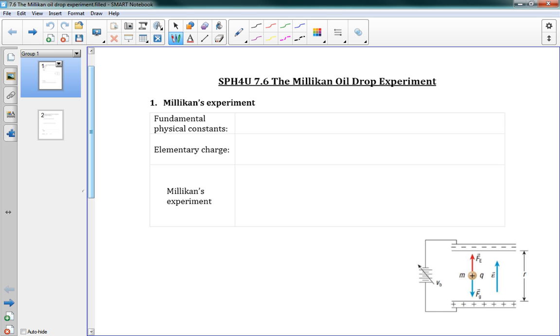So to start off with, there are certain fundamental physical constants out there, and these are measurable values that are constant and can be found experimentally. Okay, so these are our fundamental physical constants.